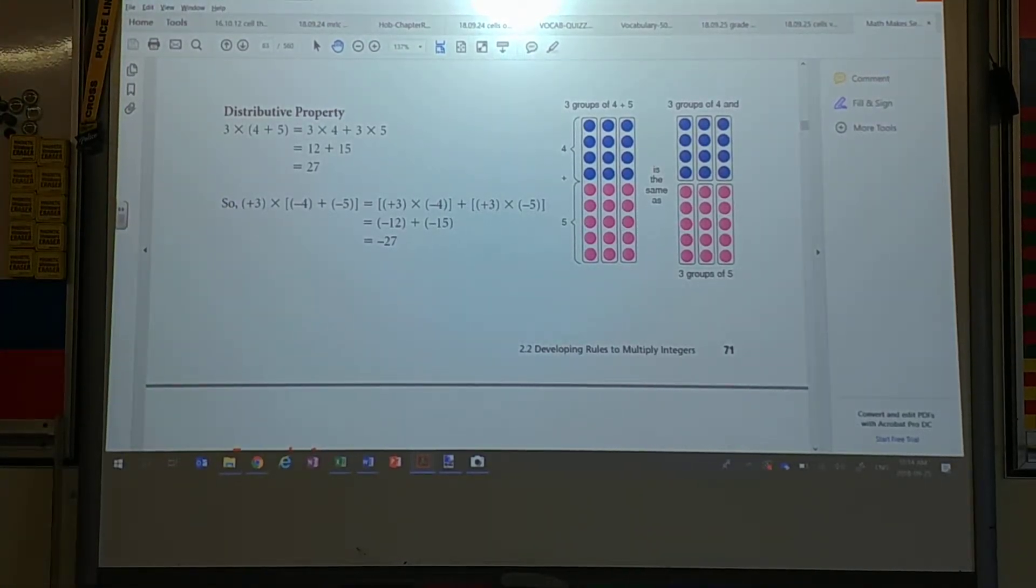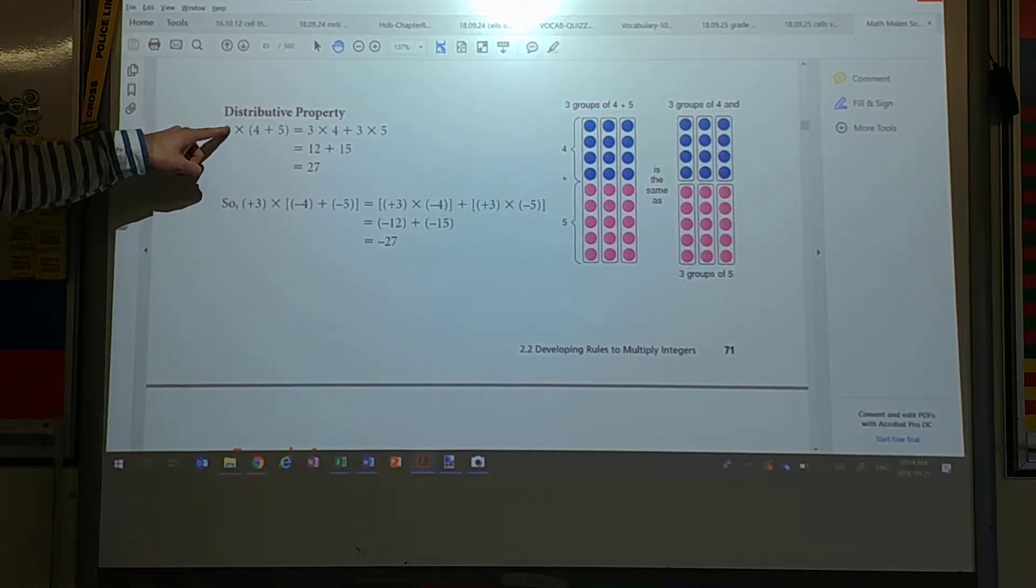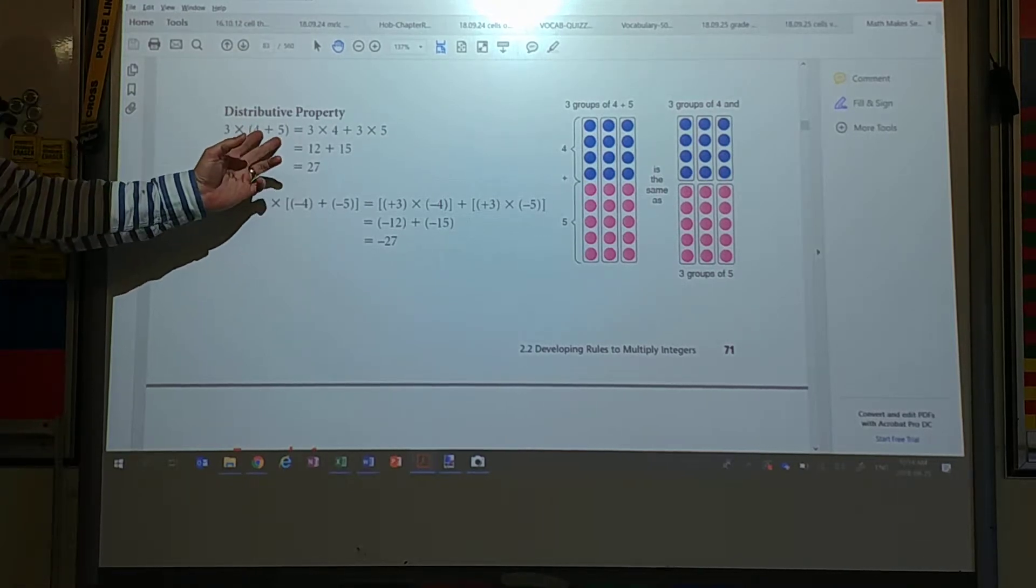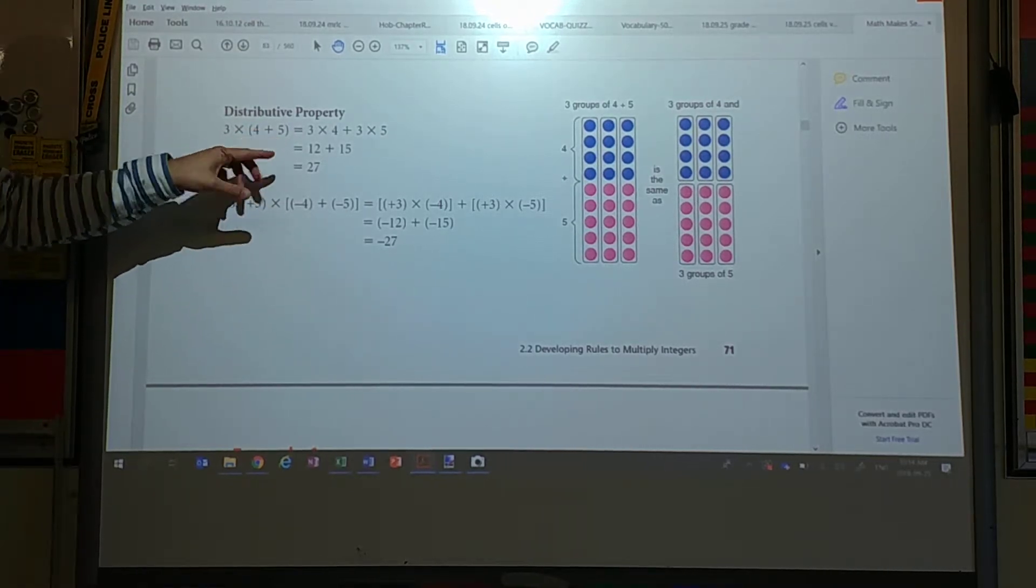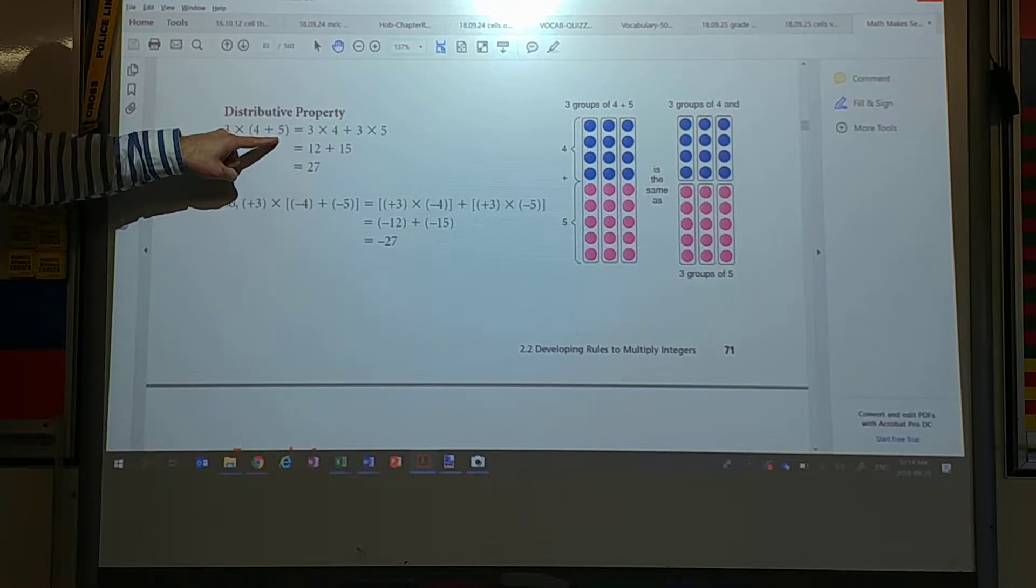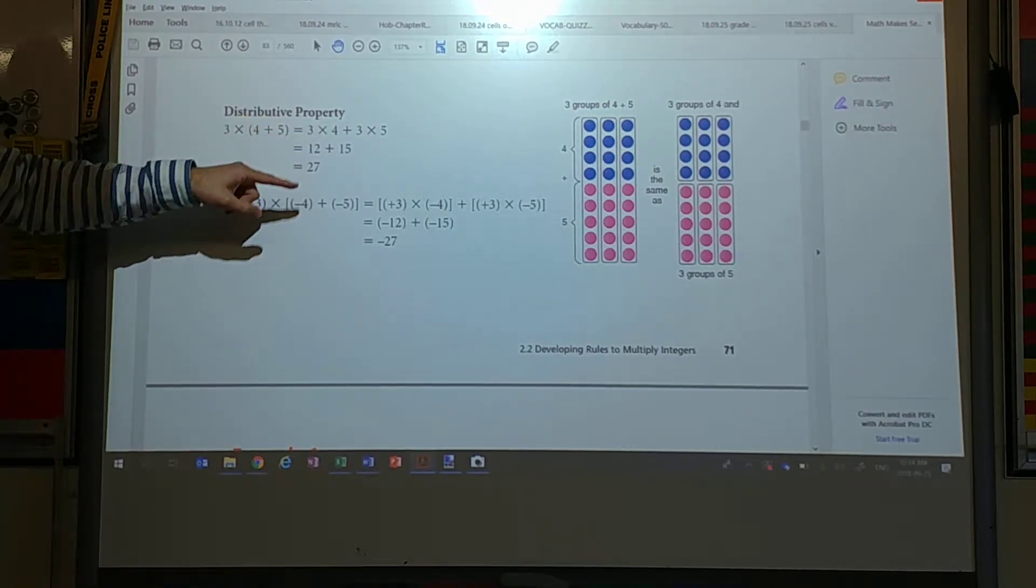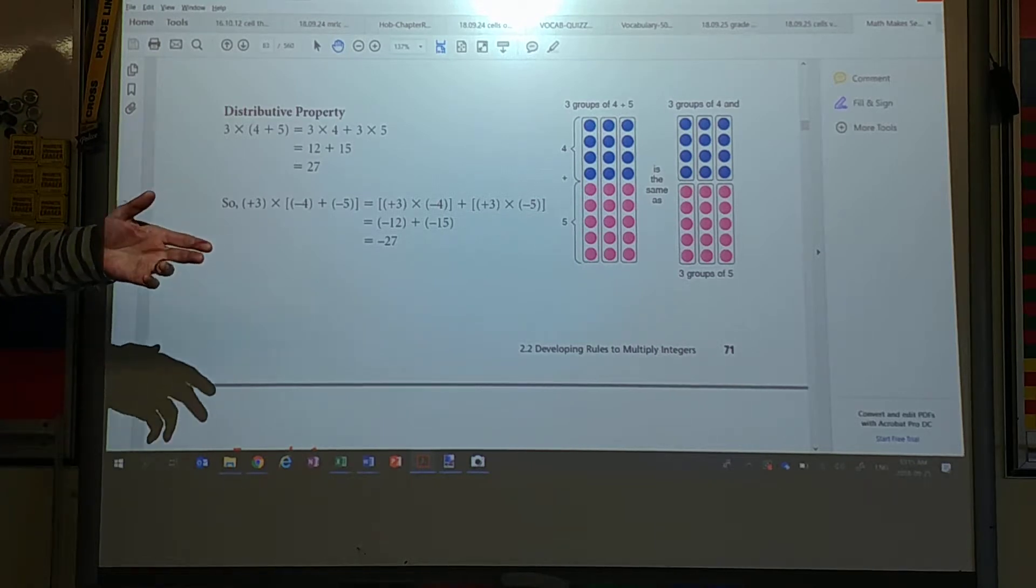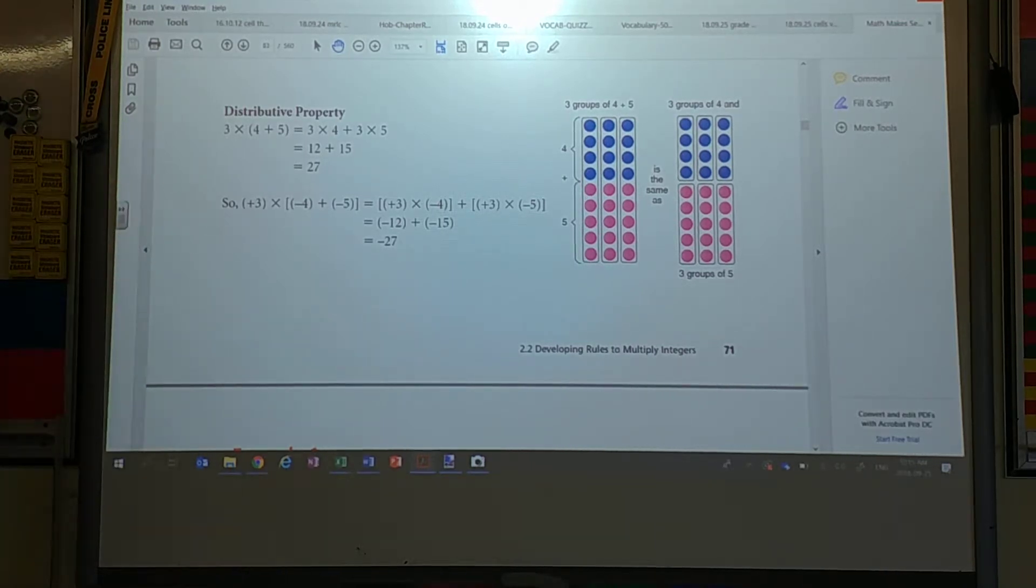But that's the distributive property where you can distribute it amongst all of them. Does it matter if I have the four plus five or the five plus four? Does it matter if I put four plus five times three? Could I put times three on the other side? No. Yes. I could. I could. That's the commutative property.